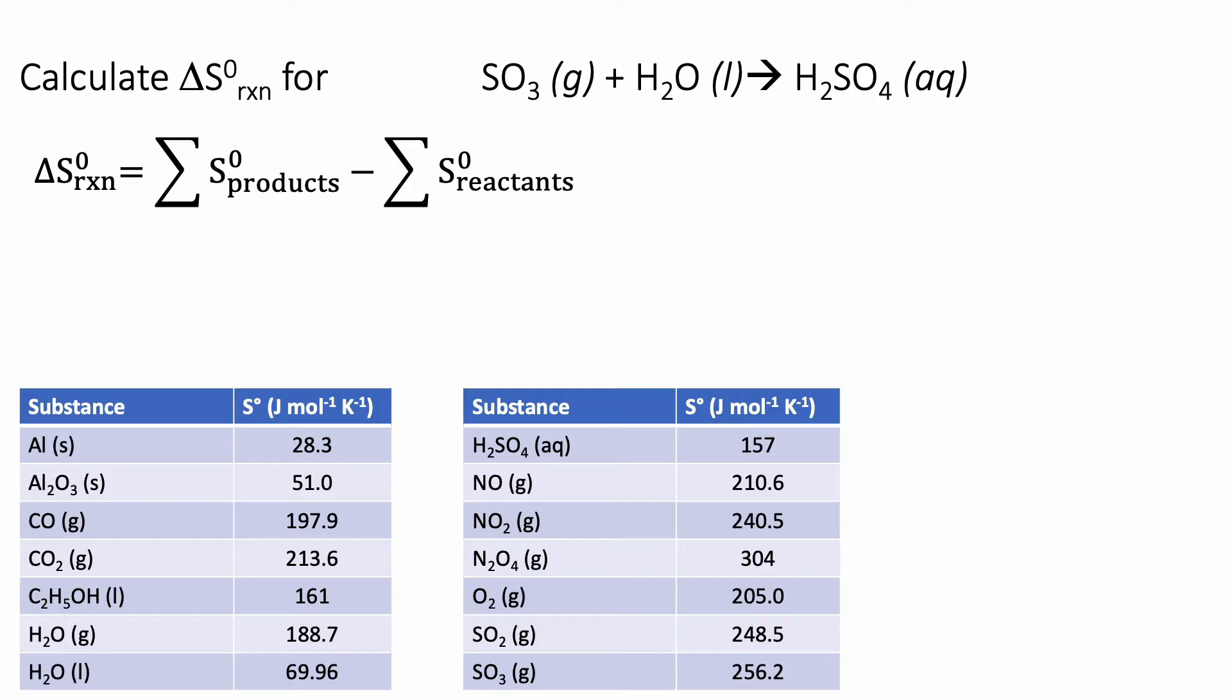And what we're going to do is sum up the entropies of all of our products. Well, we actually only have one product, H2SO4, minus the sum of the entropies of all of our reactants.